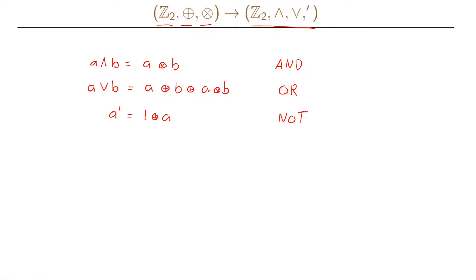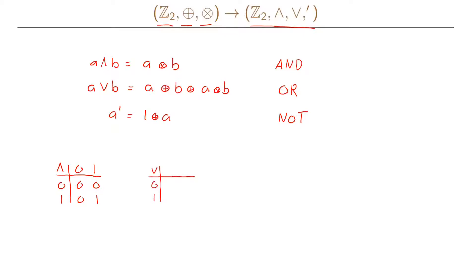Similar to Boolean rings, we can write the operation tables for our Boolean algebra. Starting with the AND operation — which is just A times B modulo 2 — we get: 0 AND 0 is 0, 0 AND 1 is 0, 1 AND 0 is 0, and 1 AND 1 is 1.